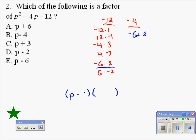p minus 6 and p plus 2. We use p because it was found in the original problem. p minus 6 times p plus 2. If you would foil this out, you would get p squared minus 4p minus 12. So which of these is a factor?